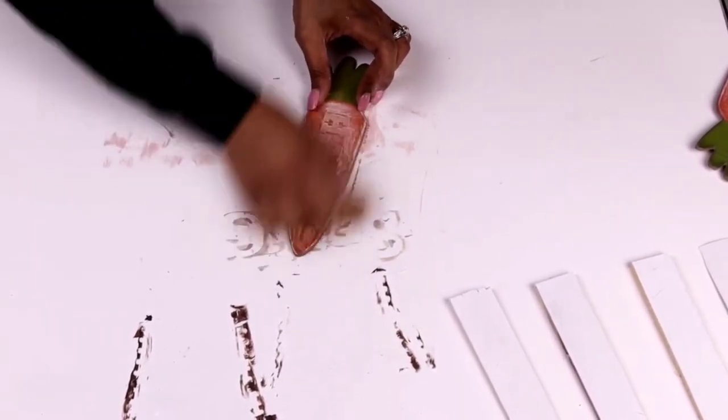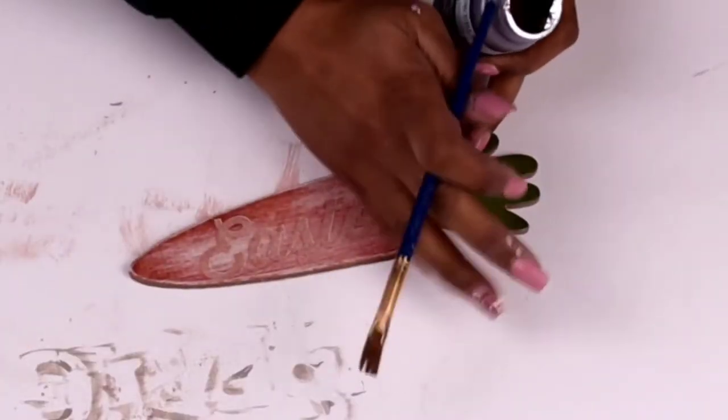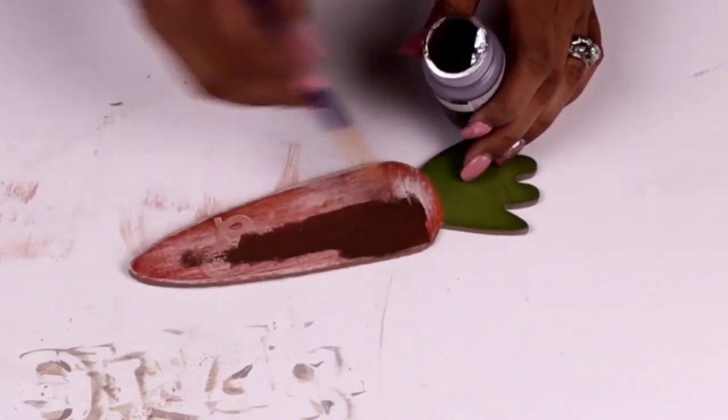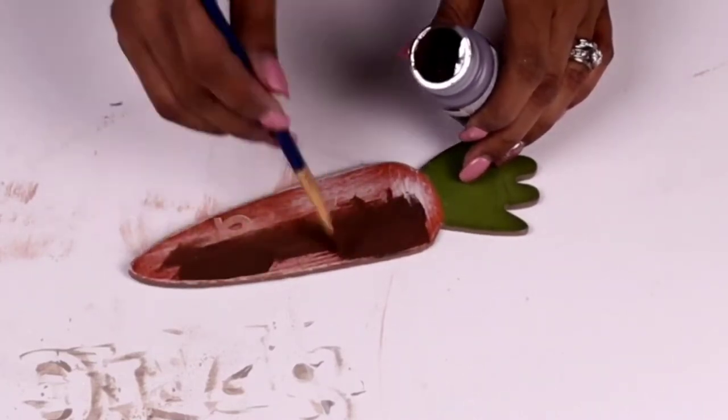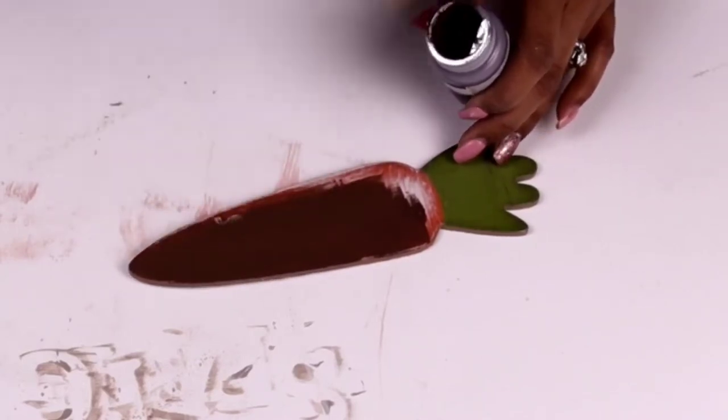I didn't do the easier thing which would have been to just turn it over and paint it from the back using the brown cardboard piece of it. I really did want to keep the green from the leafy part of the carrot and I'm happy that I did. I did go in with this truffle colored chalk paint, it's the Waverly brand as well.